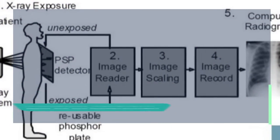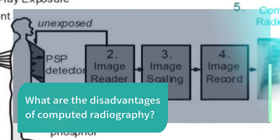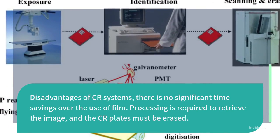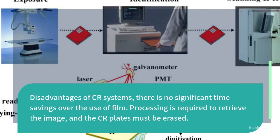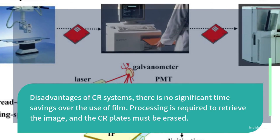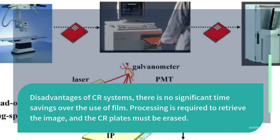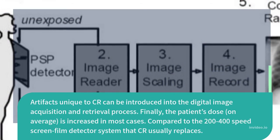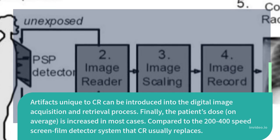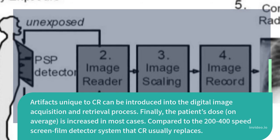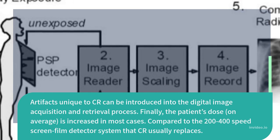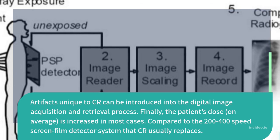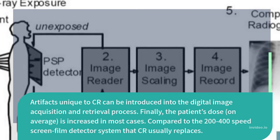What are the disadvantages of computed radiography? There is no significant time savings over the use of film. Processing is required to retrieve the image, and the CR plates must be erased. Artifacts unique to CR can be introduced into the digital image acquisition and retrieval process. Finally, the patient's dose, on average, is increased in most cases compared to the 200 to 400 speed screen-film detector system that CR usually replaces.